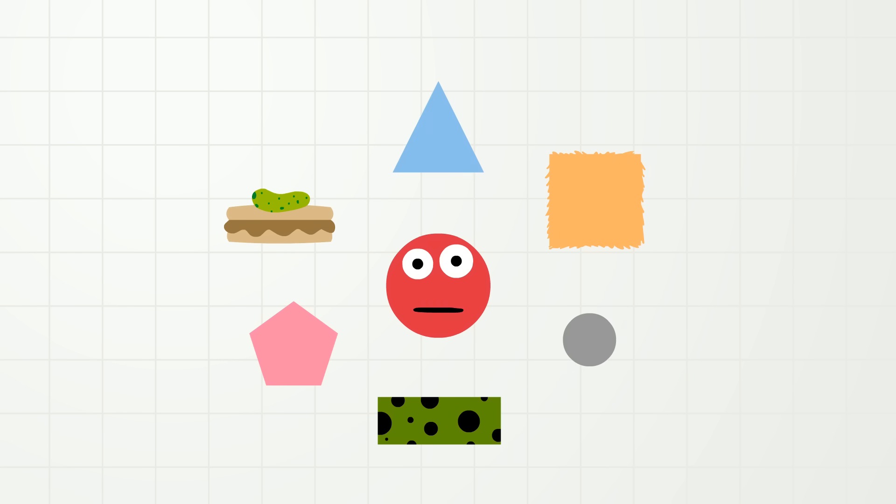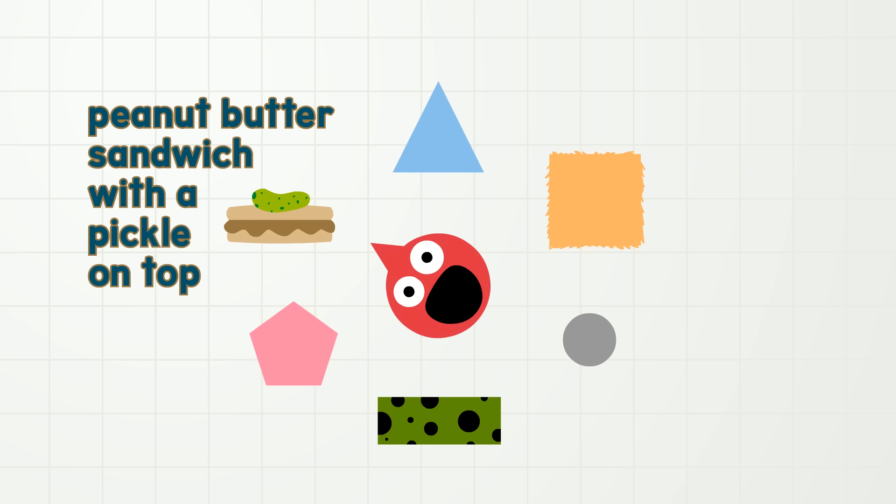Okay, that's better. So, let us practice the names of these shapes. We will start with triangle, square, circle, rectangle, pentagon, and peanut butter sandwich with a pickle on top.